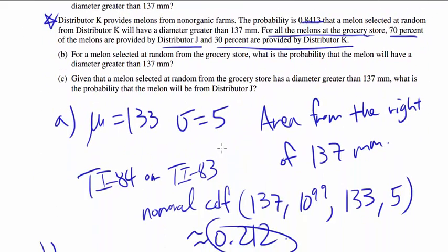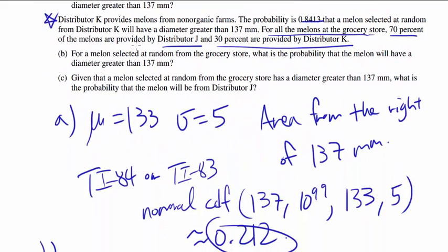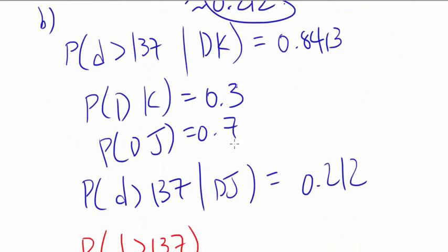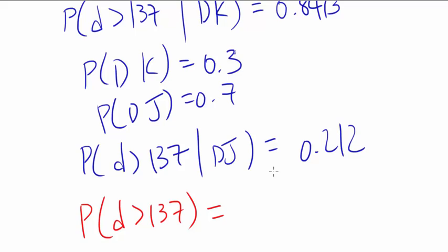Now what do we have to find? Part B. For a melon selected at random, what is the probability that the diameter is going to be more than 137? So we wish to find this. An easy way of finding this is realizing what's the probability that the diameter is more than 137 and it is from distributor K.